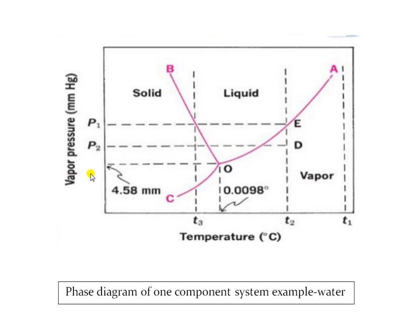This is your phase diagram. It consists of three areas: solid area, liquid area and vapor area. This is your triple point and these are the three curves: OB, OC and OA. In the earlier part we have seen about these areas; now we will move towards the curves or lines.